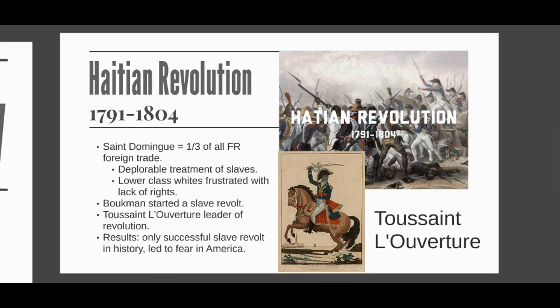A lot of them were literate and had followed the events of the American and French revolutions, and they themselves demanded liberty and equality. So by 1791, a civil war breaks out between the planters and the gens de couleur. None of the groups wanted to end slavery. However, the civil war created a vast slave uprising organized by a voodoo priest named Bookman.